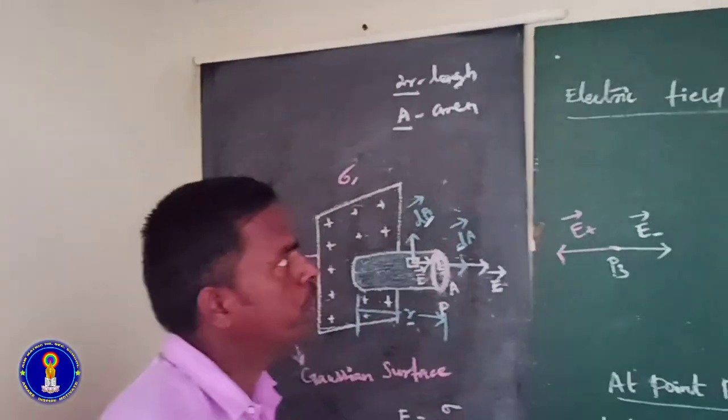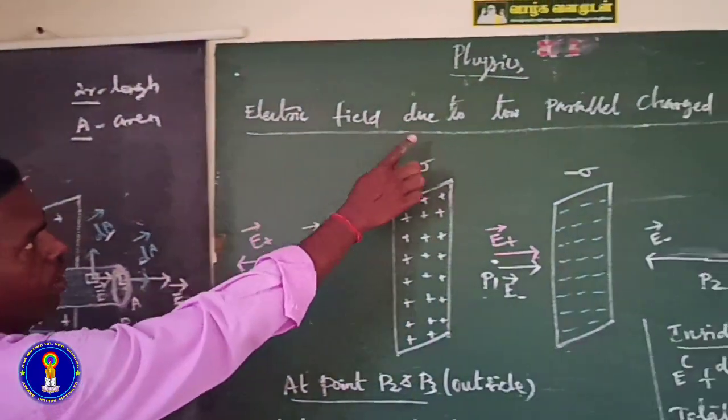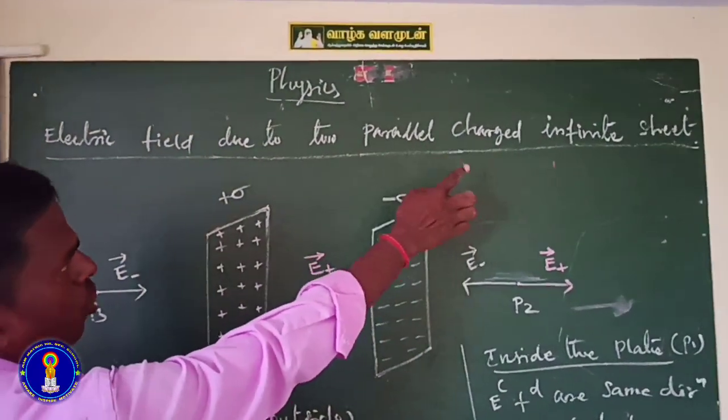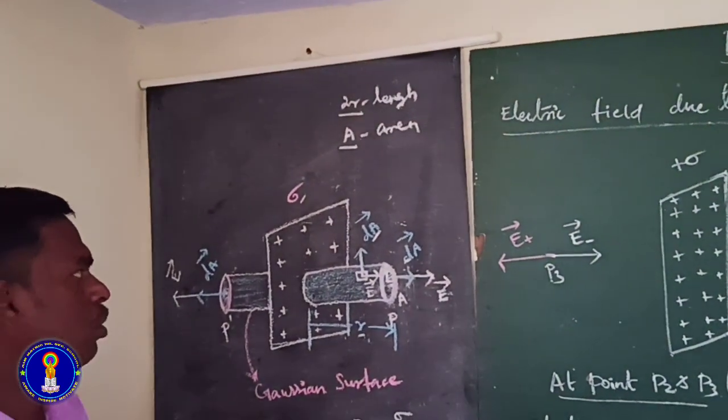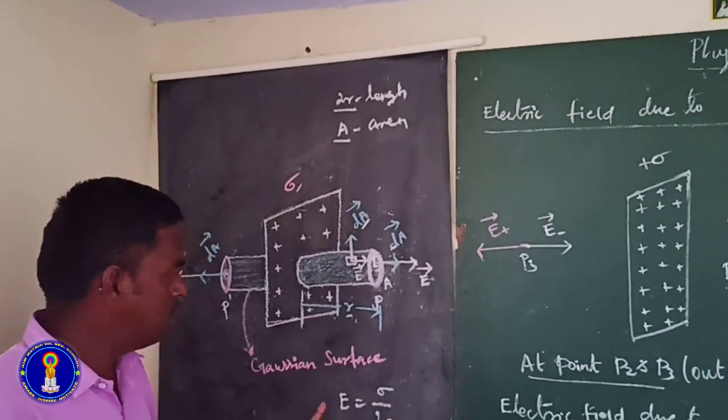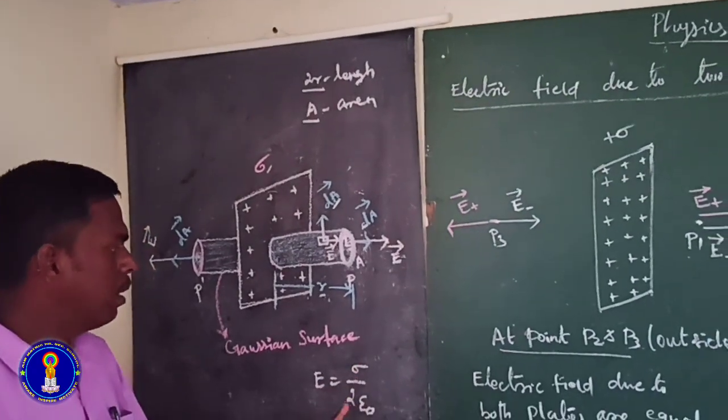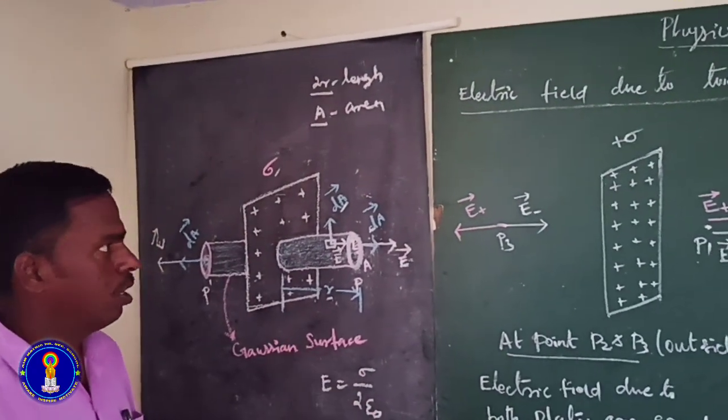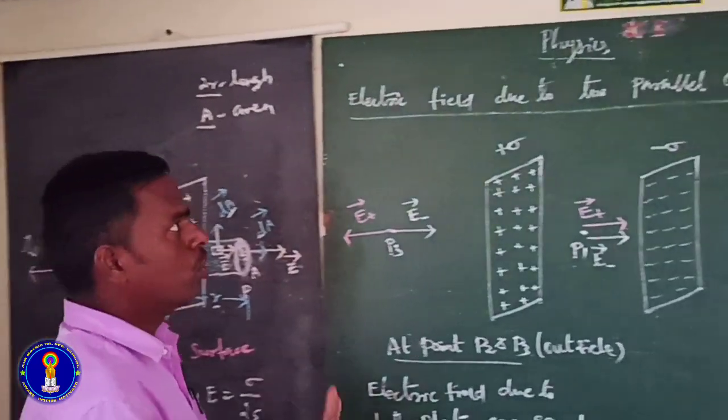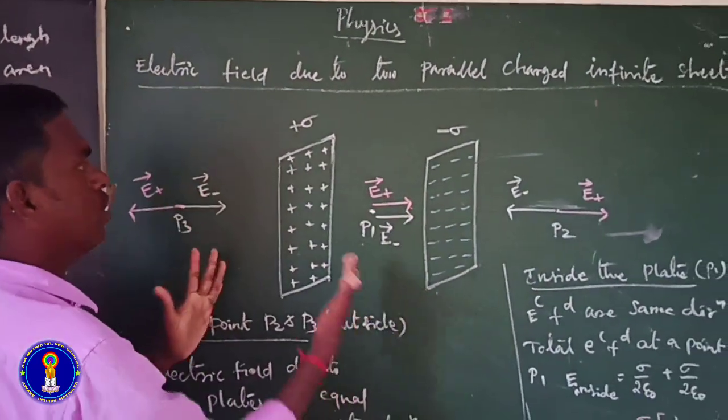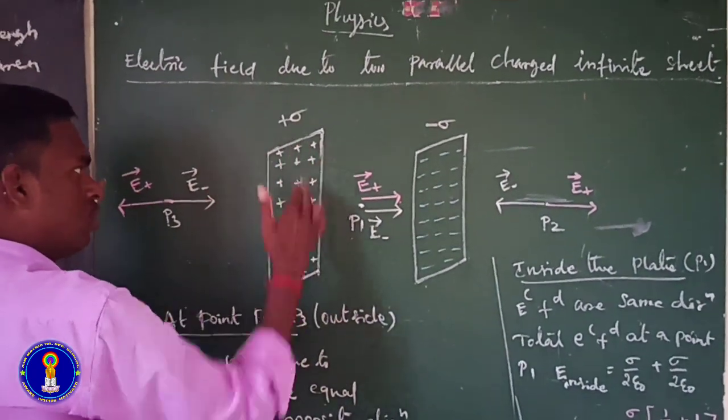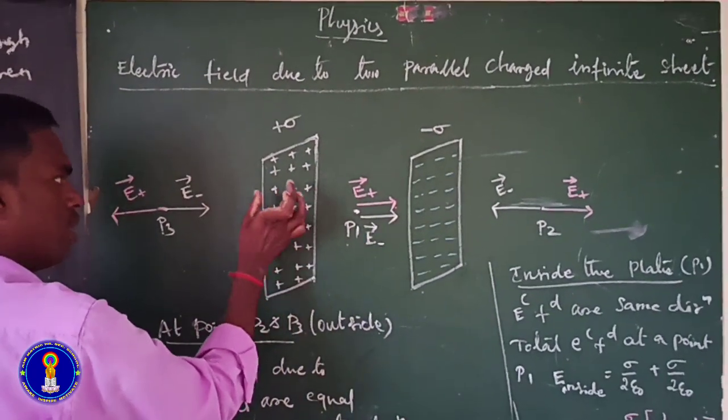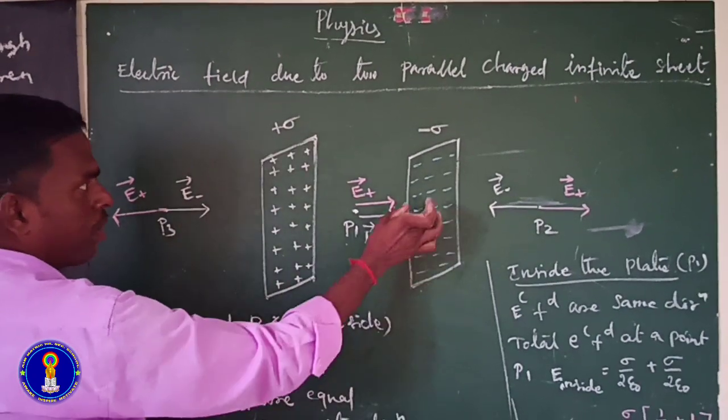In this class we are going to see about electric field due to parallel charged infinite sheet. Last class I discussed electric field due to infinitely charged plane sheet, E is equal to sigma by 2 epsilon naught. Now we are going to see the final charged infinite sheet.